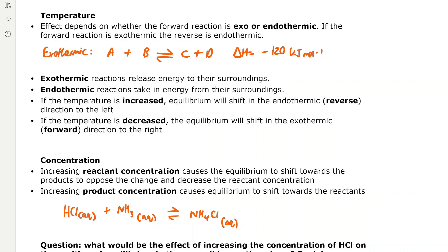The effect of a change in temperature depends on whether the forward reaction is exothermic or endothermic. Exothermic reactions release energy to their surroundings and increase the temperature, while endothermic reactions take energy in and decrease the temperature. For example, in the reaction A + B → C + D with ΔH = -120 kJ/mol, the forward reaction is exothermic and the reverse reaction is endothermic with ΔH = +120 kJ/mol.